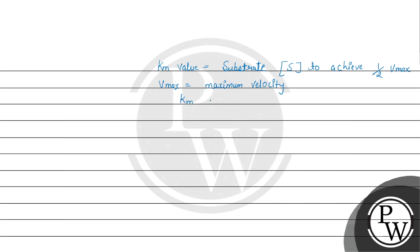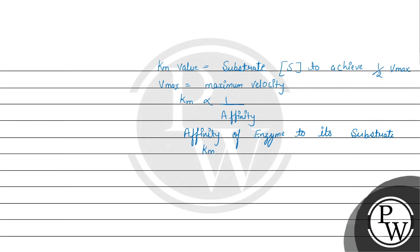Km inversely proportional होती है affinity की — याने affinity of enzyme to its substrate। अगर Km की value high होती है या increase होती है, तो Vmax unchanged रहता है।